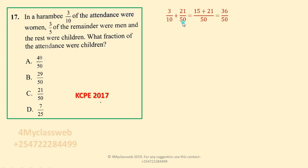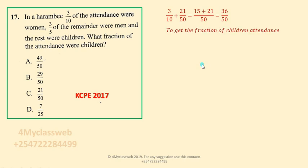With denominators 10 and 50, the LCM is 50. You divide 50 by 10 and multiply by 3 to get 15, and 50 divided by 50 times 21 gives 21. Adding 15 plus 21 gives 36, so the combined fraction for both men and women is 36 out of 50.